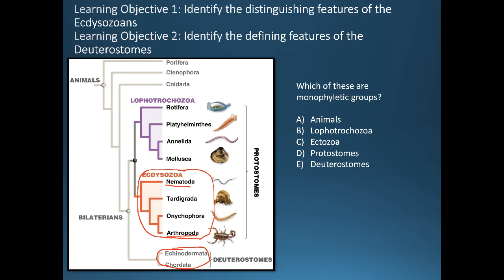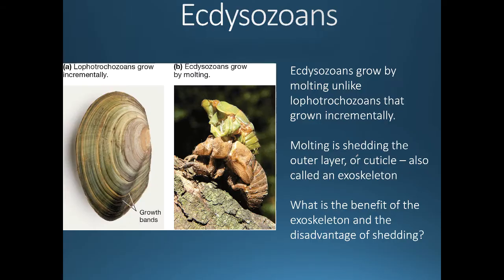It turns out that these are all monophyletic groups. They all have a common ancestor, and that common ancestor has all of the descendants and only those descendants. So let's talk a little bit more about these ecdysozoans.